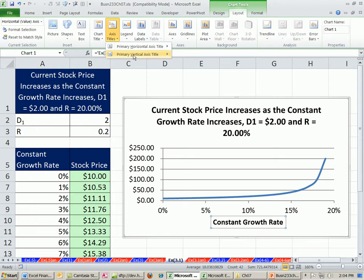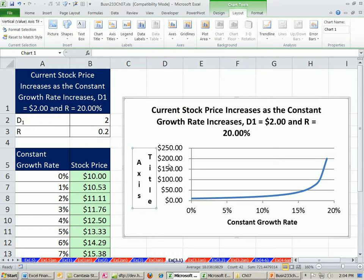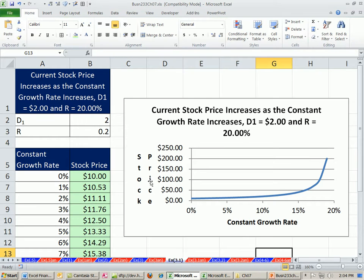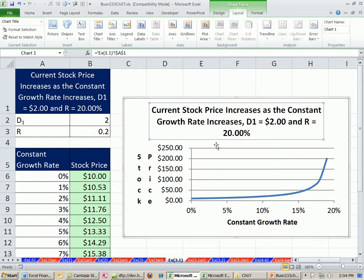Axis Titles Vertical, I'm going to say this one. Click in the formula bar, equals, and stock price. So we can see, and then you could print this out or do whatever you want. But there it is.